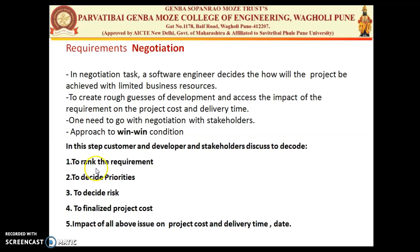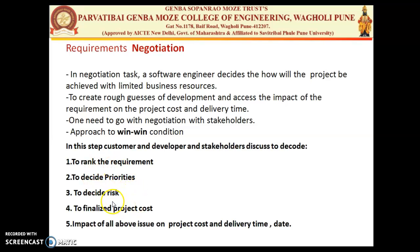In the negotiation step, the customer, developer, and stakeholder decide: first, to rank — list all the requirements; second, to prioritize — select which requirements from the list are most important; third, to decide the risk — determine what risk will be encountered if a particular requirement is selected; and fourth, to finalize the project cost and impact of all issues on project cost, delivery, and date.